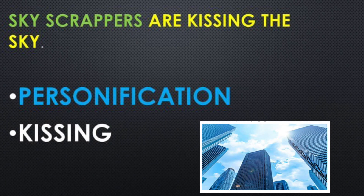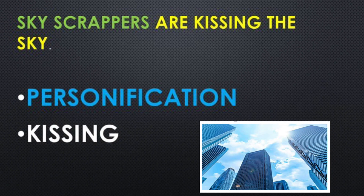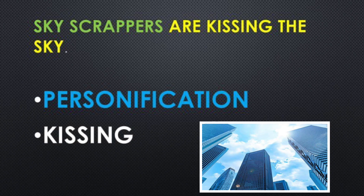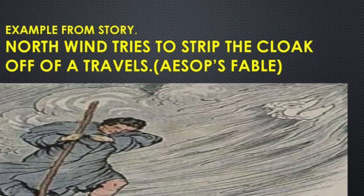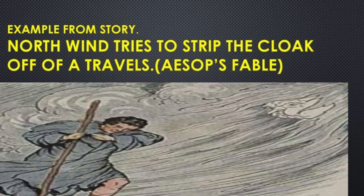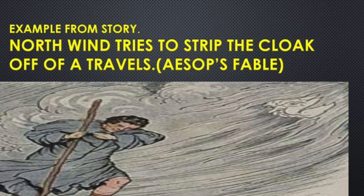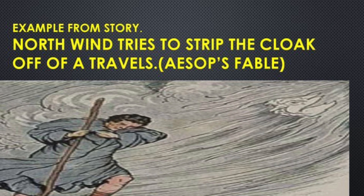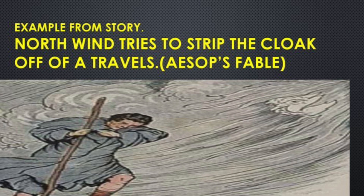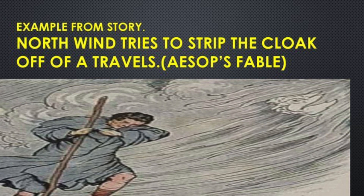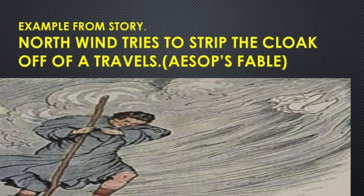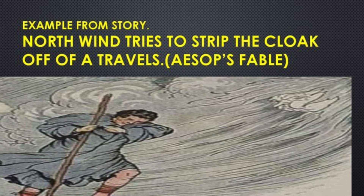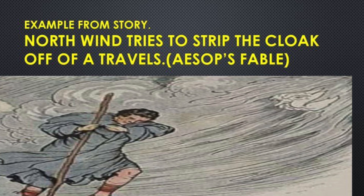'The skyscrapers are kissing the sky.' The buildings are very high, the buildings are near to the sky, and skyscrapers are kissing the sky — asman ko chhu raha hai. The meaning is the same but expressed differently. 'North wind tries to strip the cloak off a traveler' — as Aesop's fable. Aap ko pata hai ki Aesop great writer aur storyteller hai. In stories and literature, personification ka use bohat zyada hai. Shumal ki hawa us musafir ke kapde phaar dene ko hai — and this sentence is taken from Aesop's fable, and personification device is used here too.